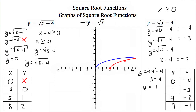Plotting these points: (0, -4), (1, -3), (4, -2), and (9, -1). Connecting them with a smooth curve gives us the graph of y equals the square root of x minus 4.